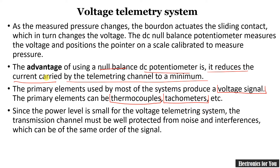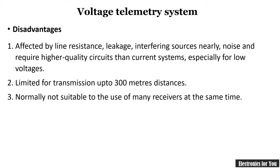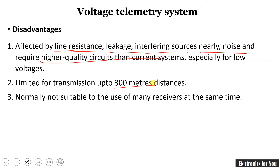The power level of a voltage telemetry system is low and therefore it can be affected by noise. The disadvantages of the voltage telemetry system include: it is affected by line resistance, leakage, interfering sources, and noise, and therefore a higher quality circuit is required. Its range is limited to 300 meters and it is not suitable for use with many receivers at the same time.